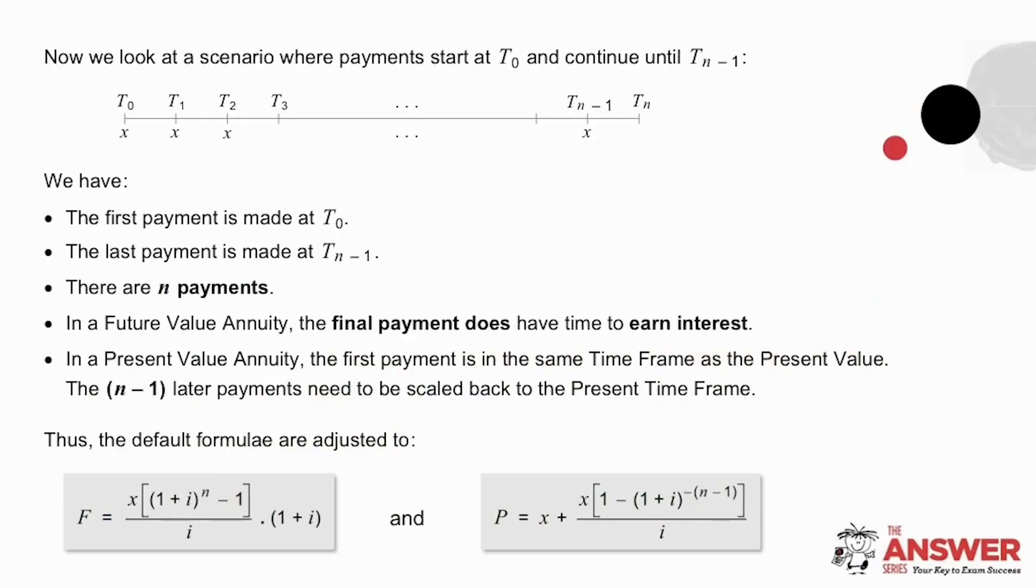Another possible variation is when there are N payments, but they start immediately. In other words, there is a payment at T0, T1, T2, and so on up until TN-1, but no payment at TN.